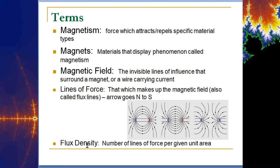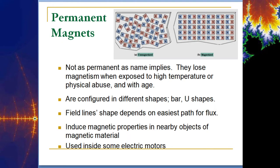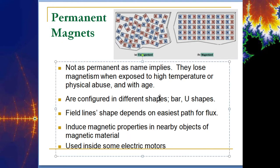The last term here is flux density — the number of lines of force per unit area. Permanent magnets we're all pretty much familiar with. You may have one on your refrigerator holding up your kid's work, a bill, or something like that.